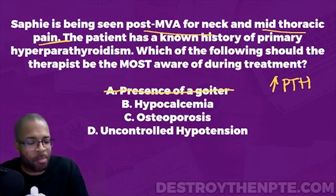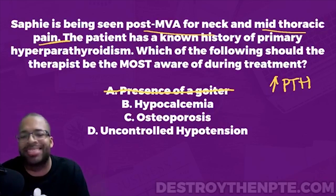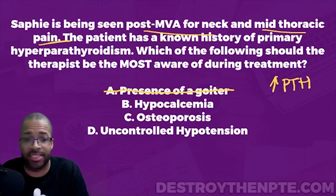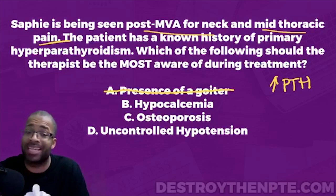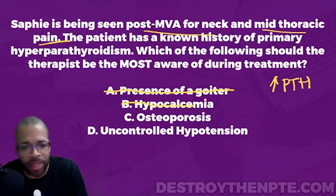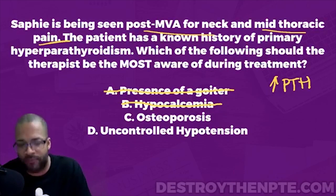Let's look at B - hypocalcemia. We already spoke about this. The job of the parathyroid is to regulate calcium, and with increased parathyroid hormone it breaks down bone and releases calcium into the blood. So if anything I would be expecting hypercalcemia, not hypocalcemia. That's the opposite of what I need to be aware of. Let's eliminate B.